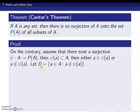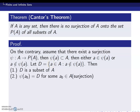Let's define a new set D, which contains the elements in capital A such that a does not belong to ψ(a). So D is the set of all elements a in capital A such that a is not an element of the subset ψ(a). Clearly, since D contains elements of capital A, we can say that D is a subset of capital A. Since D is a subset of capital A, D should be an element of P(A).